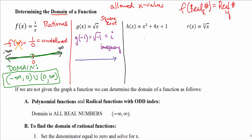Looking at the number line for the square root function, I can put in anything from 0 on — any positive value or 0. I'm not allowed to use any negative values; all negative values are excluded. So the domain is anything from 0 and including 0, written as [0, positive infinity), using a bracket to include 0 and a parenthesis for infinity.